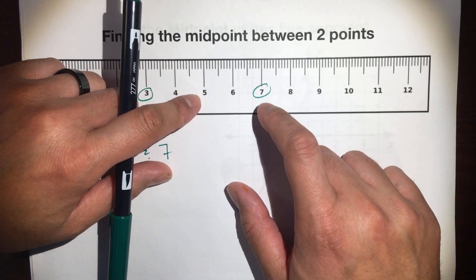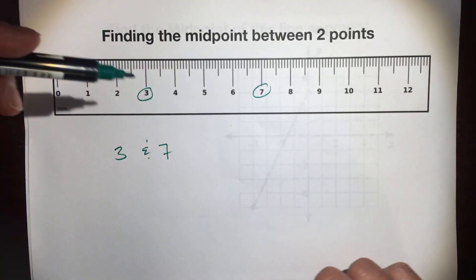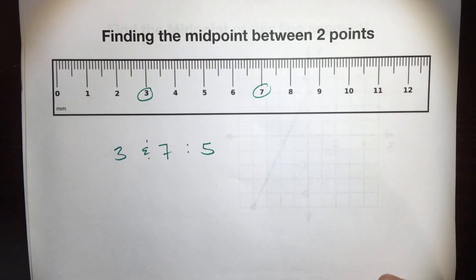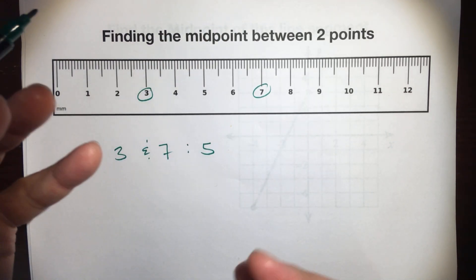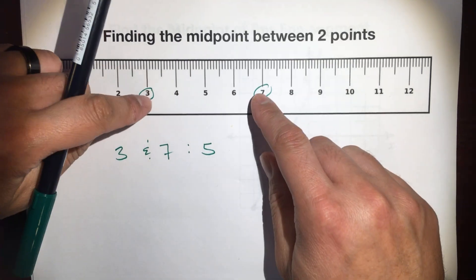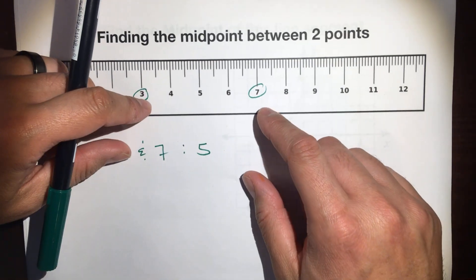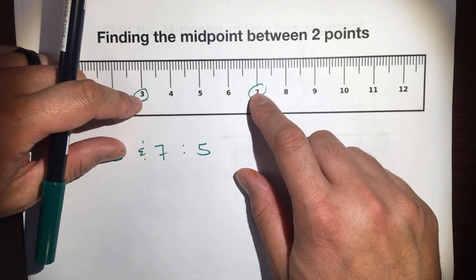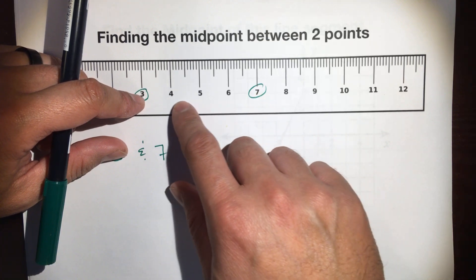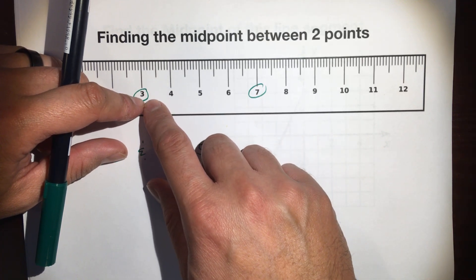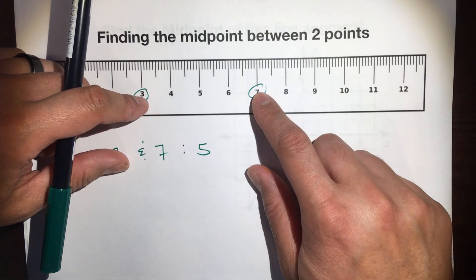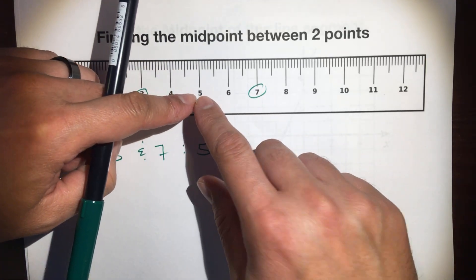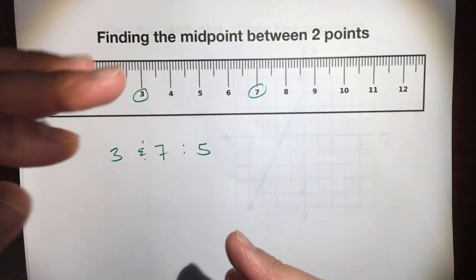Two inches to the right, two inches to the left for your friend, and you meet up at five — that's the midpoint. When you are equidistant, you're being fair. If you made your friend go all the way to you, that means you're lazy. Let's meet in the middle — unless it's a dangerous spot, then meet somewhere safe.